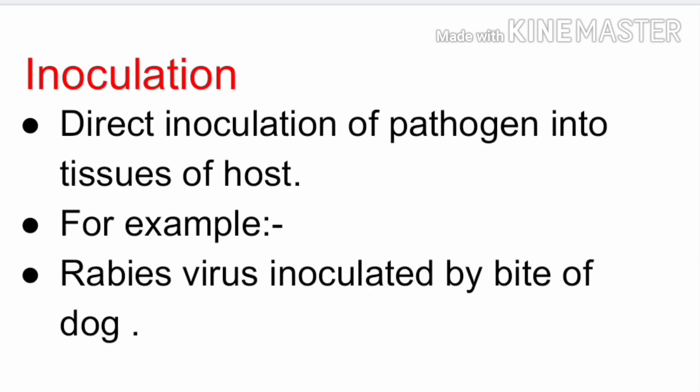Next is inoculation. Inoculation is what happens when our body is directly injected — when fluid is introduced directly into our body. It means direct inoculation of a pathogen into the tissue of the host. For example, the rabies virus is inoculated by the bite of a dog.